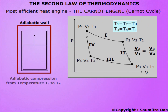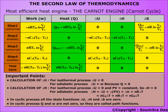Step 4 is adiabatic compression from TL to TH. Here work is done on the system and it is positive, equal to nCv(TH − TL). Therefore, adding all the work done, we get the net work done, which is equal to −nR(TH − TL) · ln(V2/V1). This is negative because work is done by the system.